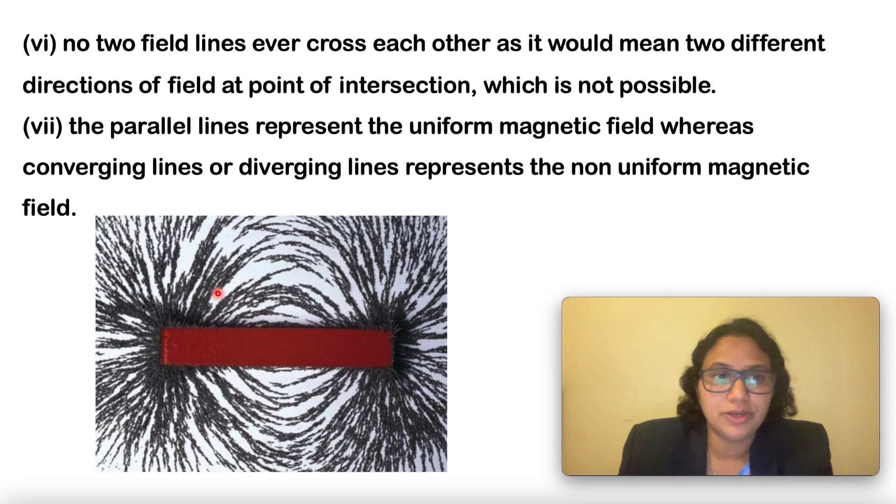The parallel lines represent the uniform magnetic field, whereas the converging line or diverging line represent the non-uniform magnetic field.